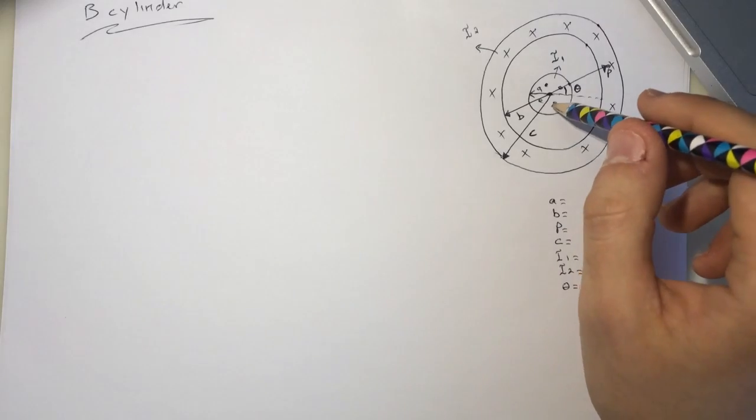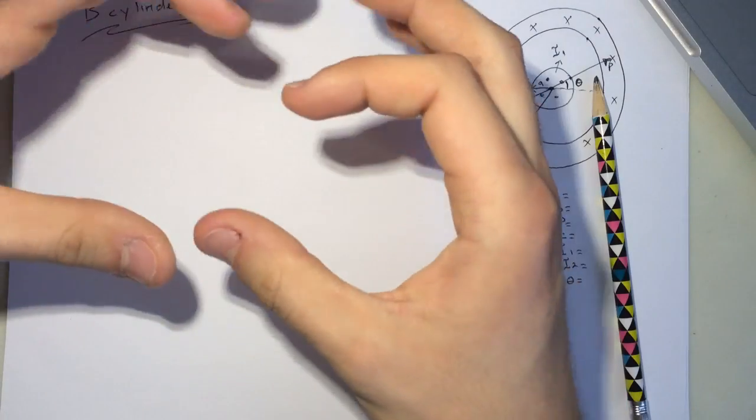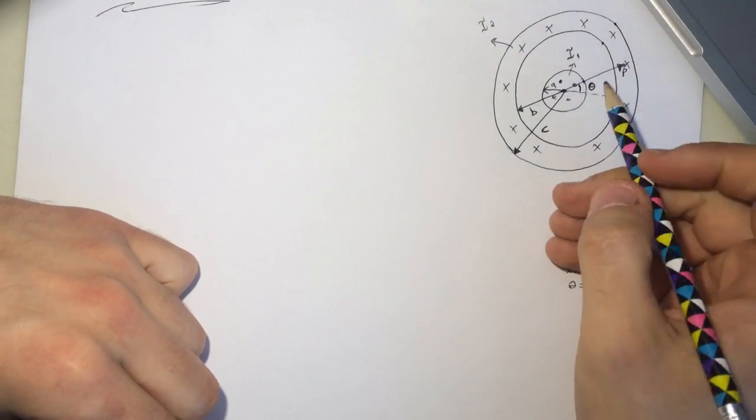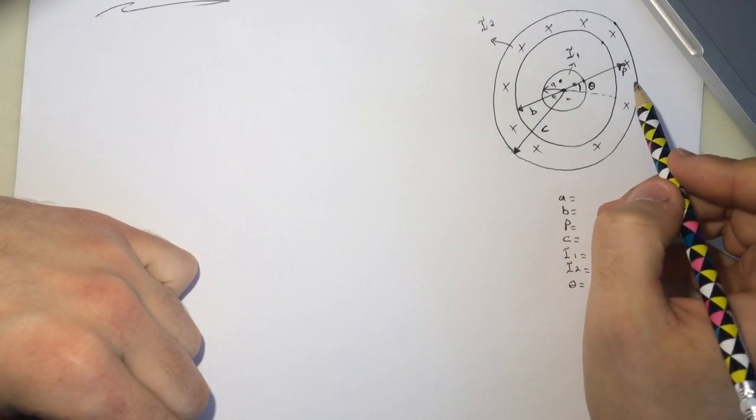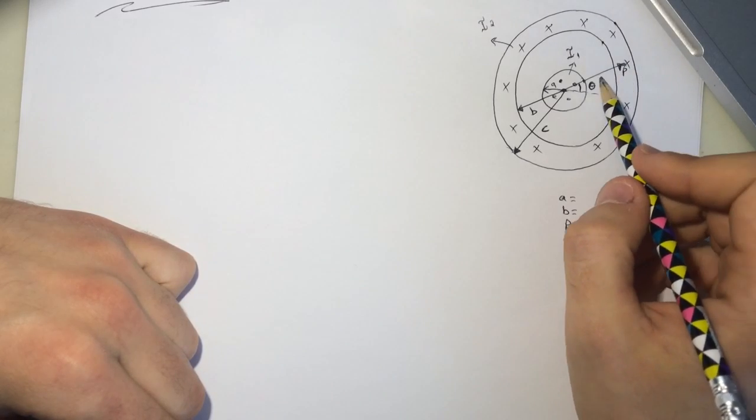So we have current that's pointing outside, this is like a cylinder, like it's going this way, there's one going up and down. So we need to find the x component of the magnetic field on this point.